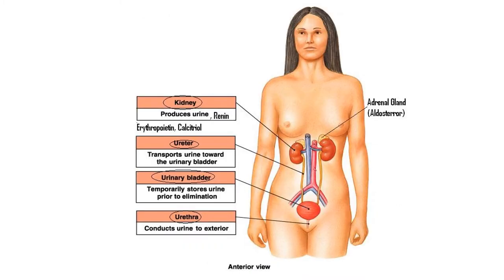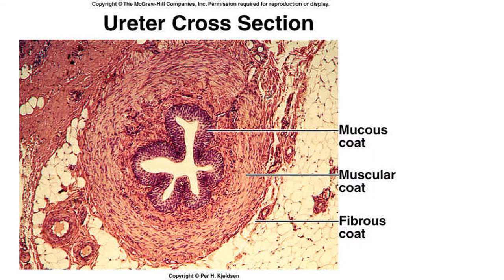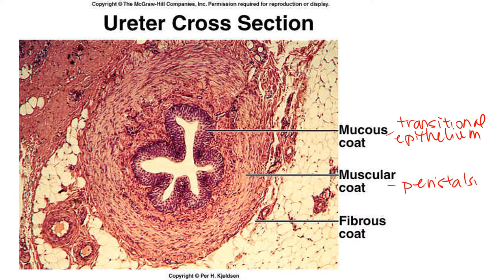The kidneys produce urine at a constant rate, and the ureters carry that urine down to the urinary bladder for storage. Let's talk about the construction of a typical ureter. This is similar to the way the digestive system is constructed. There is an innermost mucosa lining made up of transitional epithelial tissue, which is a stretchy type of epithelium. There is a muscular layer that provides peristalsis, helping to milk the urine along and move it down toward the urinary bladder.